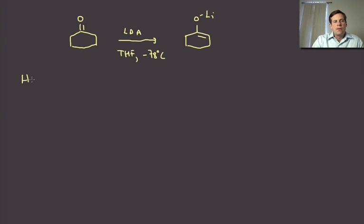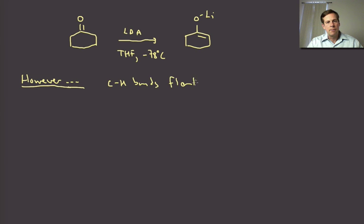Now, there is a class of carbonyls that we're going to spend a good bit of time talking about where we don't need LDA, where we can actually get away with something much weaker. This is going to be CH bonds that are flanked by two carbonyls or other electron withdrawing groups.